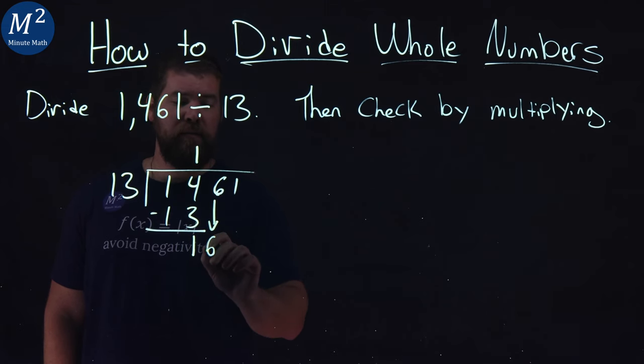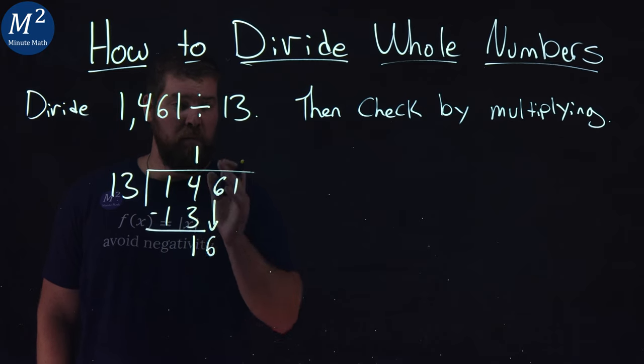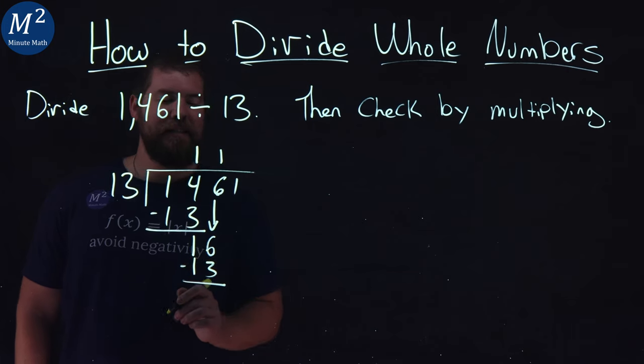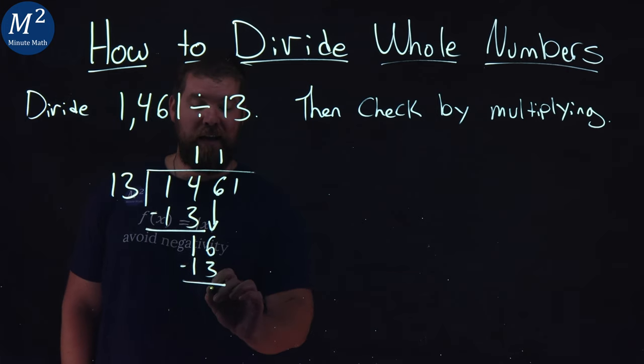We bring down the 6. Can 13 go into 16? Yes, it can. 1 time. 1 times 13 is 13. Subtract the two numbers. 16 minus 13 is 3.